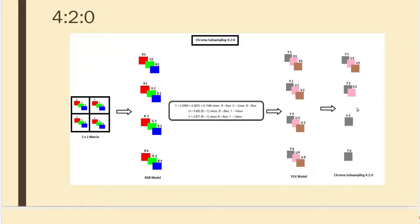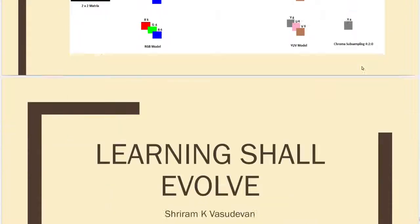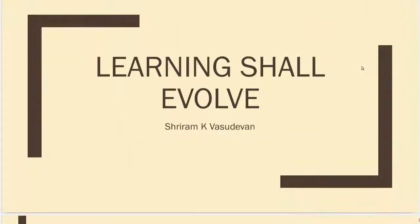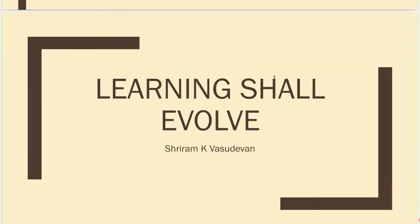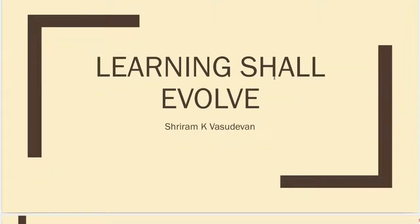The final method is 4:2:0, where I have all 4 Y values available, 2 U values, and only 1 V value. This is chroma subsampling. From these models, there are other models which have evolved in the market, which we will see later.